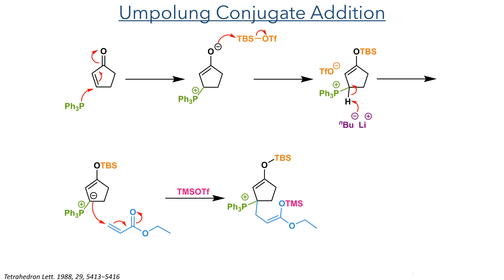The first reaction utilises cyclopentenone, which reacts in an umpolung fashion to act as a nucleophile. This is achieved by first reacting it with triphenylphosphine, generating an enolate intermediate that is trapped with TBS triflate. The beta position can then be deprotonated with n-BuLi to form a ylide, and this undergoes nucleophilic addition to ethyl acrylate. This addition generates an enolate and once again this was trapped as a silyl enol ether.